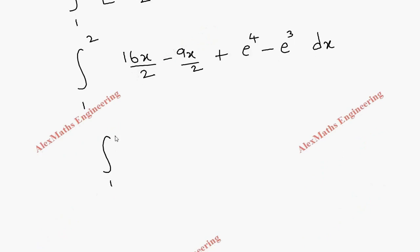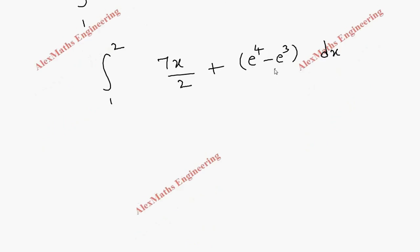Now further simplifying we get integral 1 to 2 after subtraction 7x by 2 plus this whole thing is taken as 1 constant. So that when we do integral with respect to x we can treat this whole term as single term.